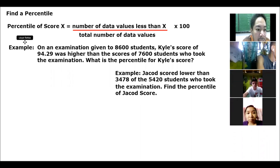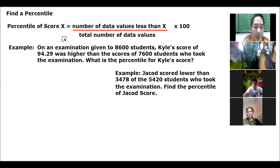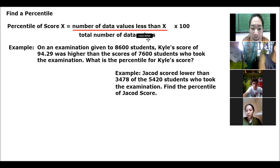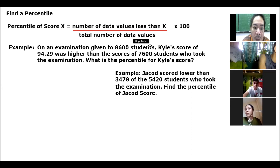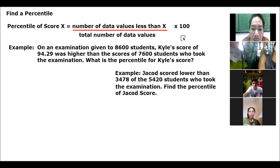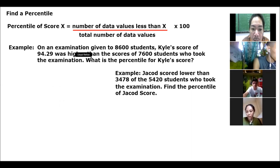The percentile of a score x is equal to the number of data values less than x, divided by the total number of data values, multiplied by 100. So multiplied by 100, ganito yan.